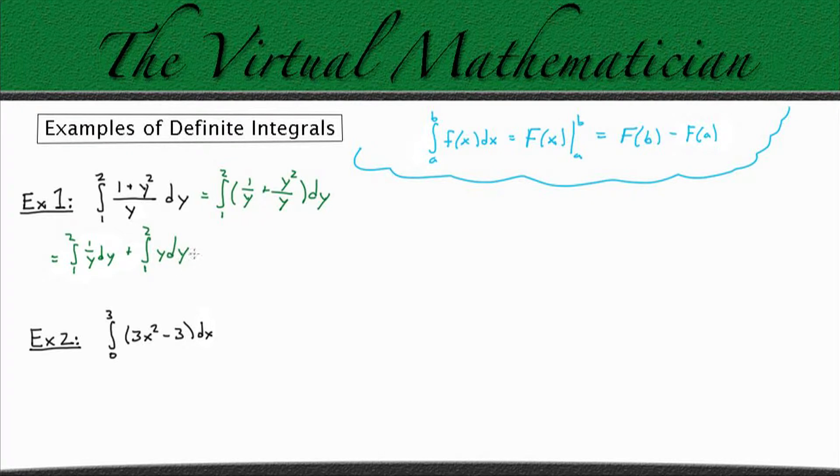Now we can evaluate these two integrals separately and then use the fundamental theorem of calculus. We know the integral of (1 over y) equals the natural log of the absolute value of y, and we're going to evaluate that from 1 to 2.